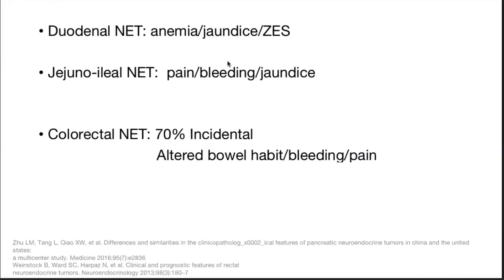Duodenal neuroendocrine tumors may present with anemia, jaundice, or symptoms of Zollinger-Ellison syndrome. Jejuno-ileal neuroendocrine tumors may present as pain, bleeding, and jaundice. Colorectal neuroendocrine tumors are mostly incidental — around 70% — although they may present as altered bowel habits, bleeding, and pain.